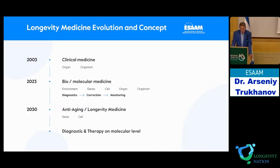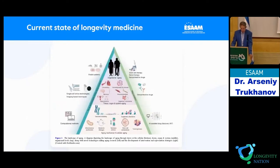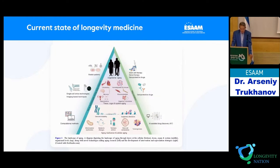By 2030, we expect to arrive from anti-aging medicine to longevity medicine, where through precision medicine we could do diagnostic and therapy at the molecular level. Our Chinese colleagues published last year a picture demonstrating this expectation, made by YASAM. In this pyramid, we see at the bottom the current state of molecular medicine, and at the top clinical medicine with diagnosis at the organ and organismal level — on the left side, current methods; on the right side, technologies.